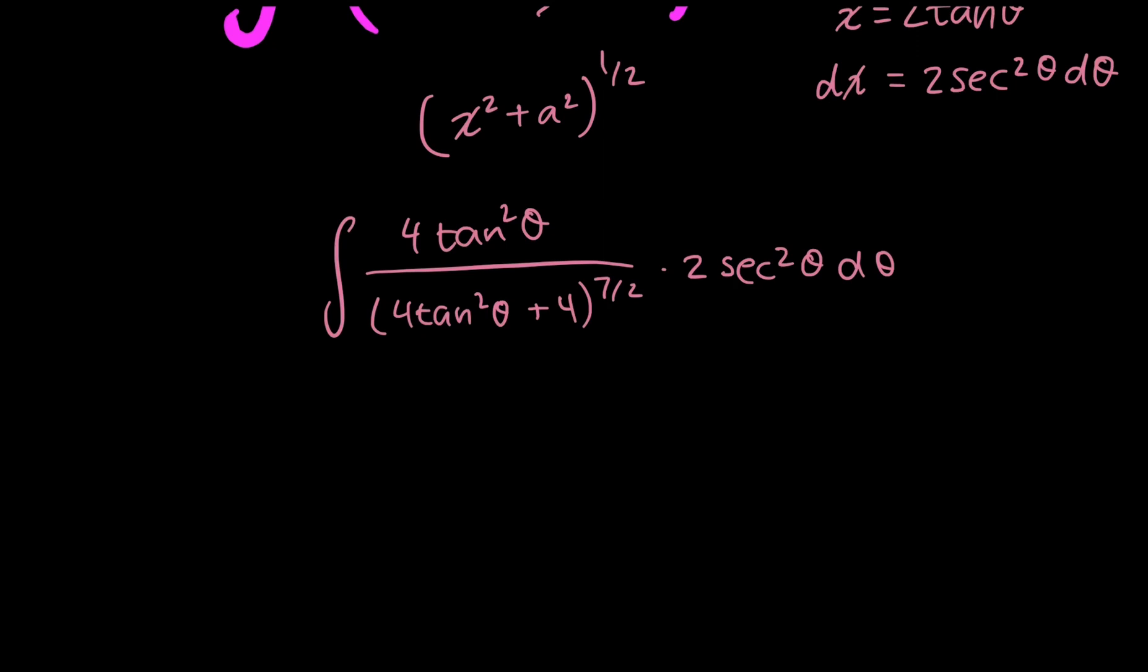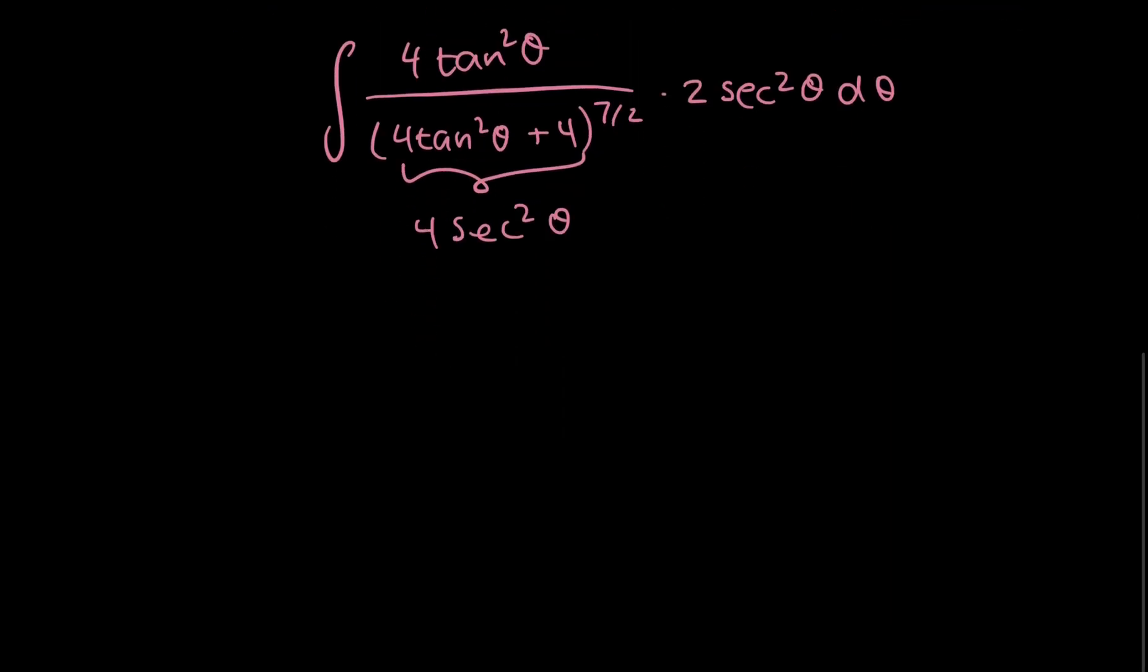So I have 4 tan squared theta plus 4. What I'm going to do here is I'll just use the trig identity that tells me that this just equals 4 secant squared theta.